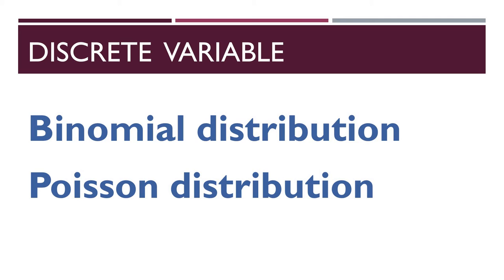The most important discrete random variable is the binomial distribution. Quite often we deal with experiments where there are only two possible outcomes — for example, tossing a coin gives either heads or tails. This is the classic example of a binomial distribution.